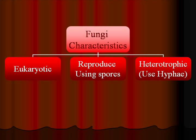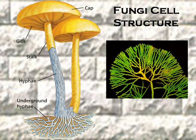Fungi use specialized structures called hyphae to absorb their food, rather than eating it the way animals do. Except for unicellular yeasts, the bodies of all multicellular fungi are arranged in specialized structures called hyphae. Hyphae are the branching thread-like tubes that make up the bodies of multicellular fungi. In the picture of the mushroom, if you pull it apart you'll see small thread-like structures throughout — those are the hyphae. The hyphae actually extend underground like roots, and when you have a fairy ring in your yard, all those mushrooms are connected underground by a giant web of hyphae.